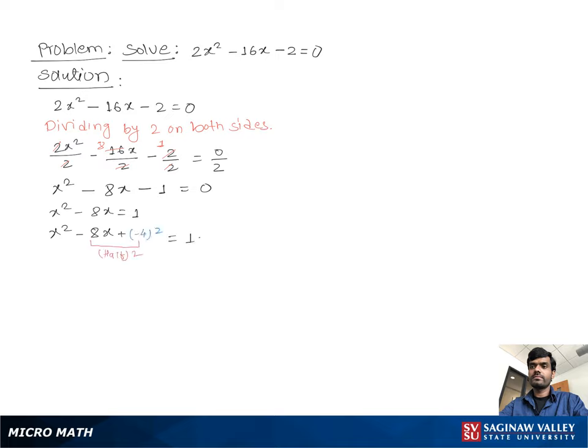So you can write x² - 8x + (-4)² = 1 + (-4)². Then we get (x - 4)² = 1 + 16. Then we get (x - 4)² = 17.